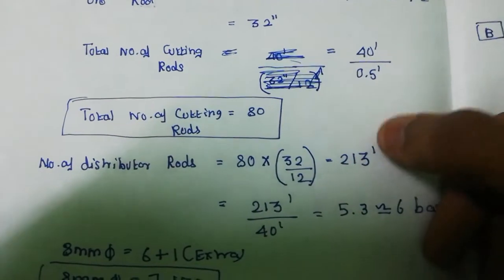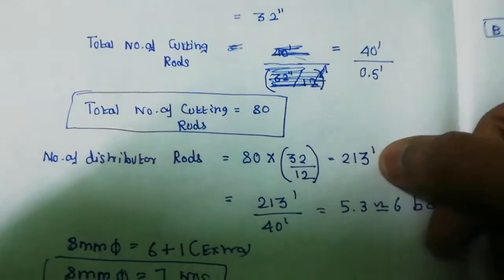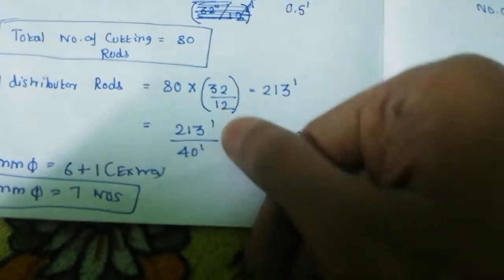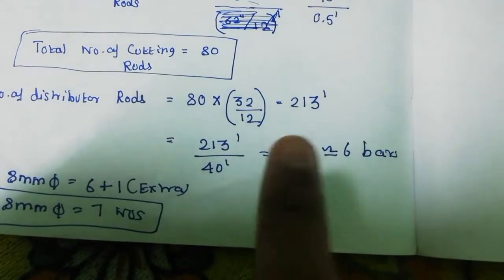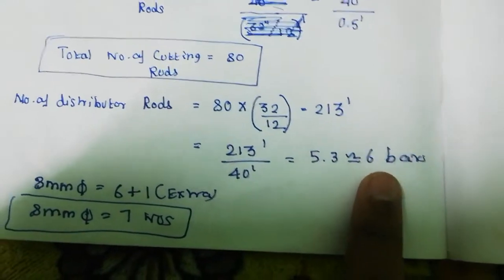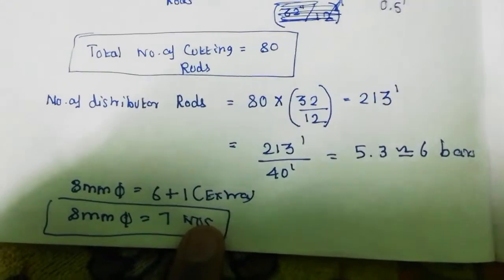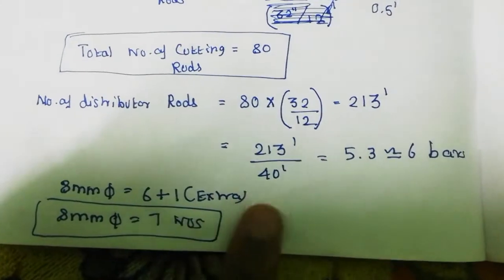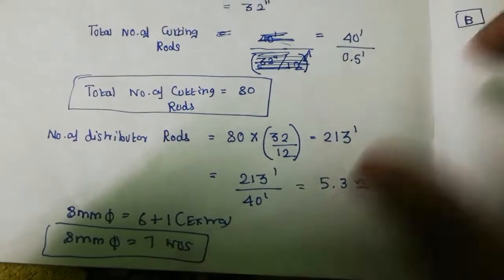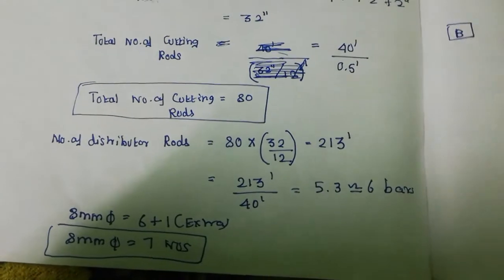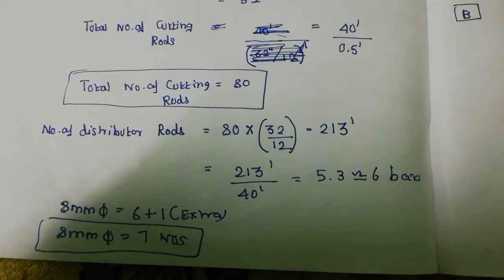Each section is 12 inches, 12 inches, 13 inches. For the distributor rod: 5.3, round up to 6 bar, then 6 plus 1 gives 7 rods total. Number of rods: 8.